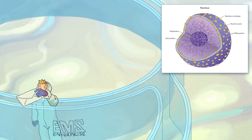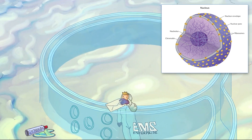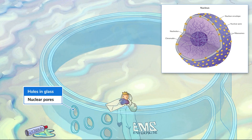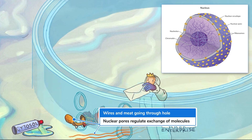The nuclear envelope is a part of the endomembrane system. The endomembrane system, or EMS, is the group of organelles involved in modifying, packaging, and transporting lipids and proteins. There's an EMS Enterprise logo on the command center glass — be sure to look out for more EMS logos as we explore the rest of the spaceship. The nuclear envelope also has nuclear pores: protein complexes that perforate both the inner and outer membranes to regulate the entry and exit of macromolecules like RNA, hence the orange wires and proteins.